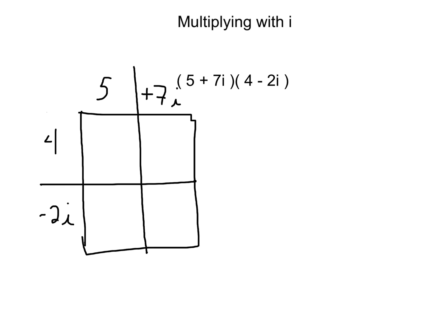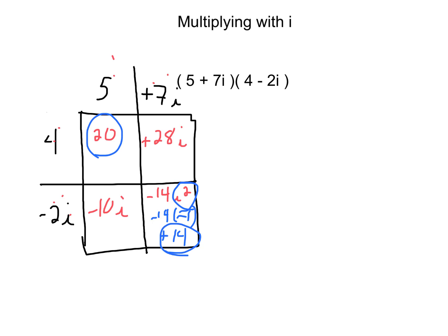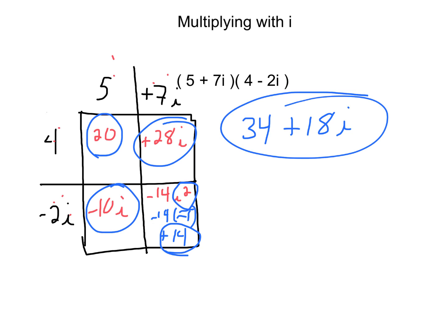We're back. As you can see, I drew in the box. Let's start to multiply: 4 times 5 is 20. 4 times 7i is positive 28i. Negative 2i times 5 is negative 10i. And negative 2 times 7 is negative 14, and i times i is i squared. Now let's evaluate: i squared is really negative 1, so negative 14 times negative 1 is positive 14. Combine like terms: 20 plus 14 is 34. Negative 10i plus 28i is plus 18i. All said and done.